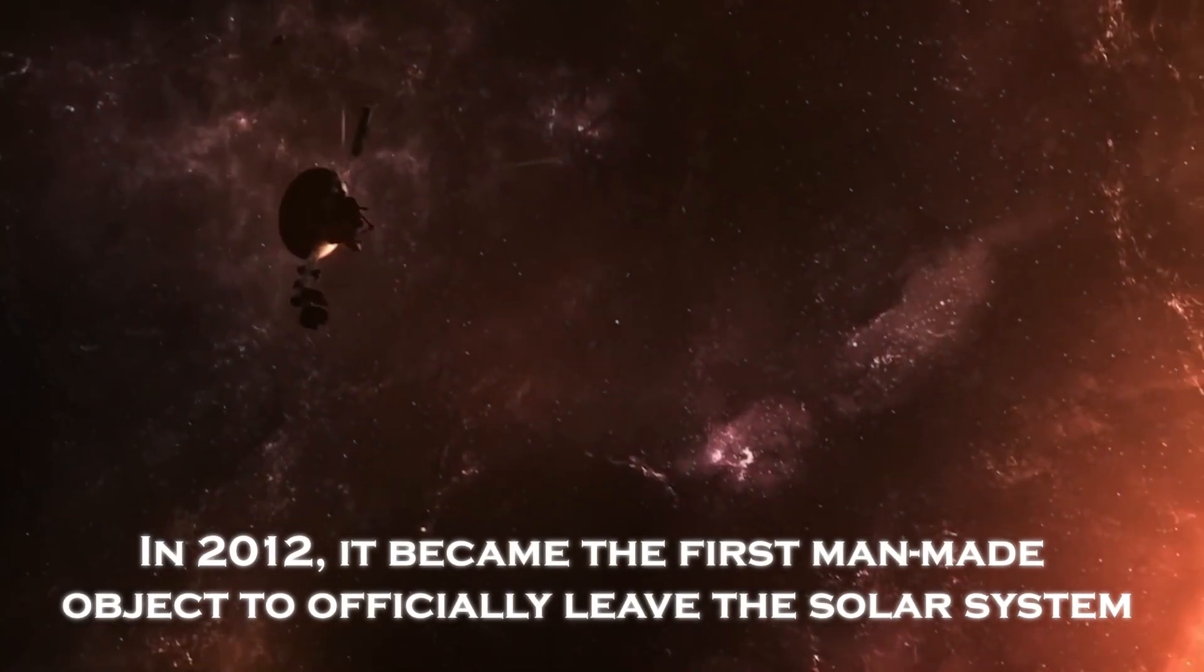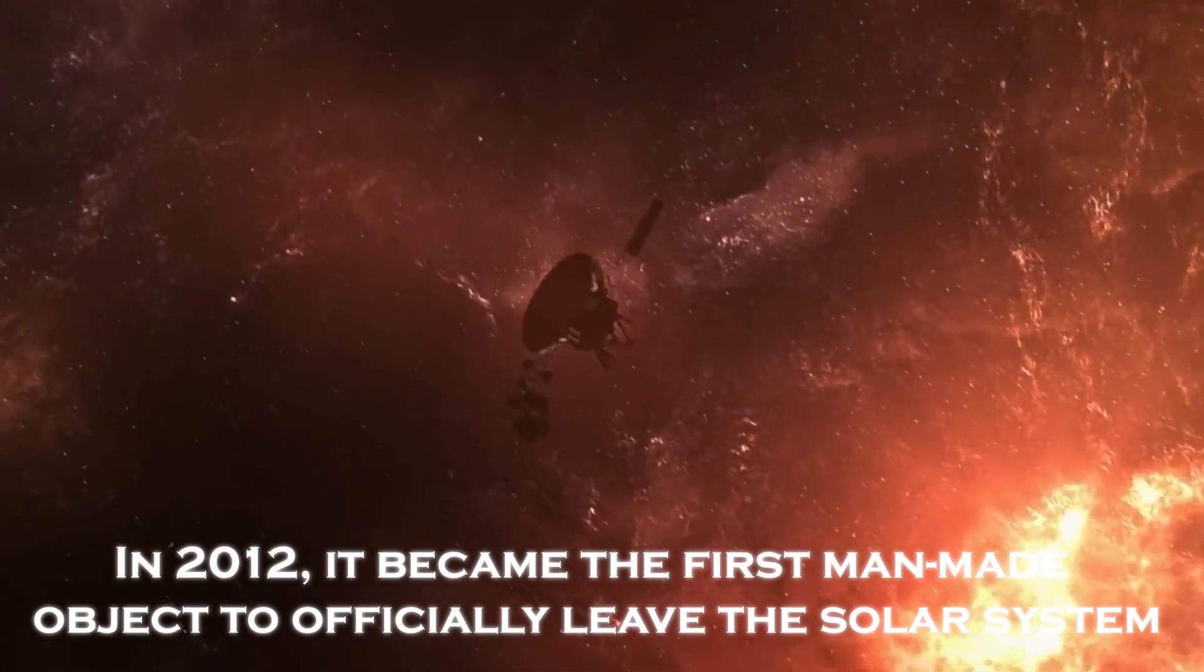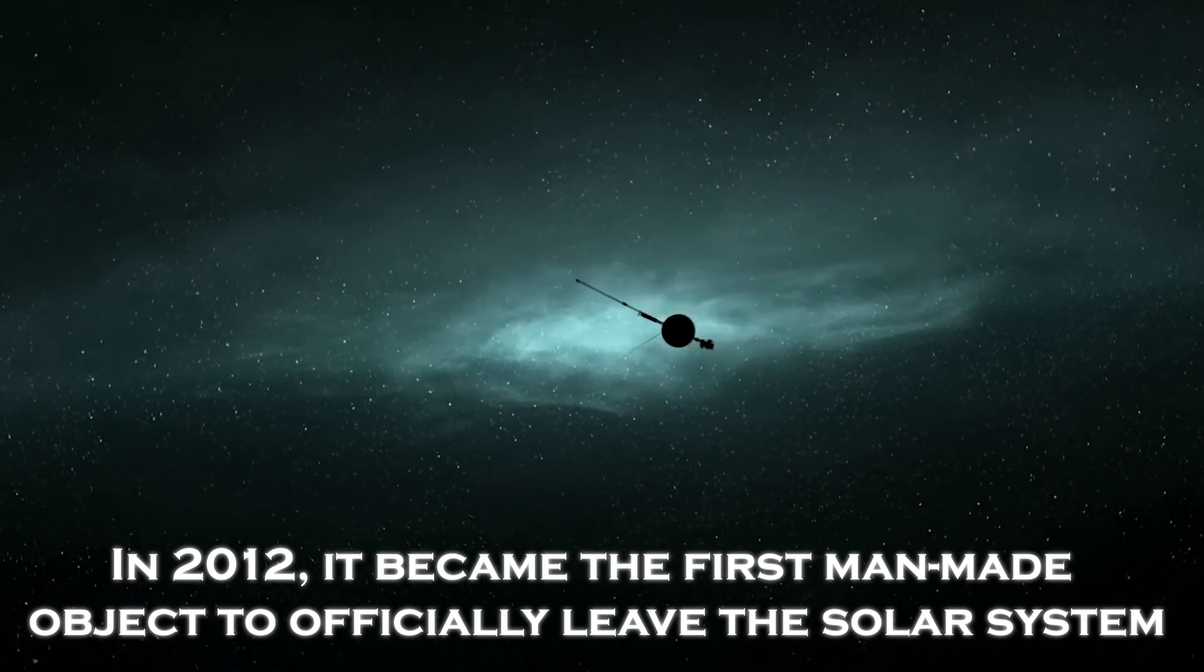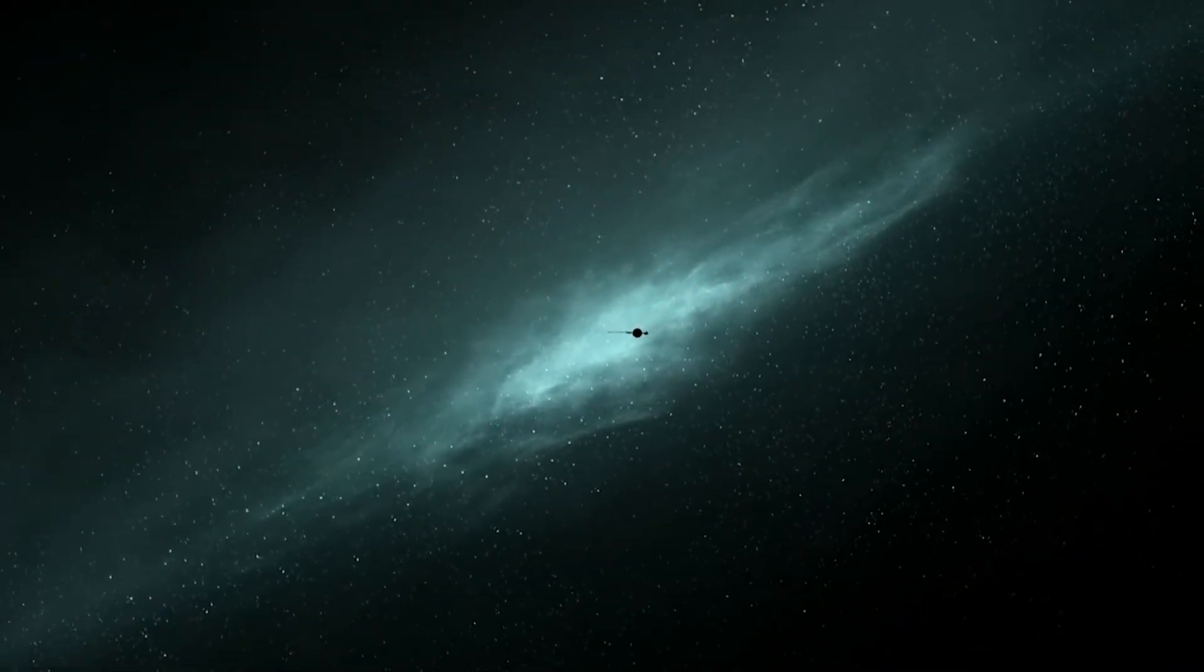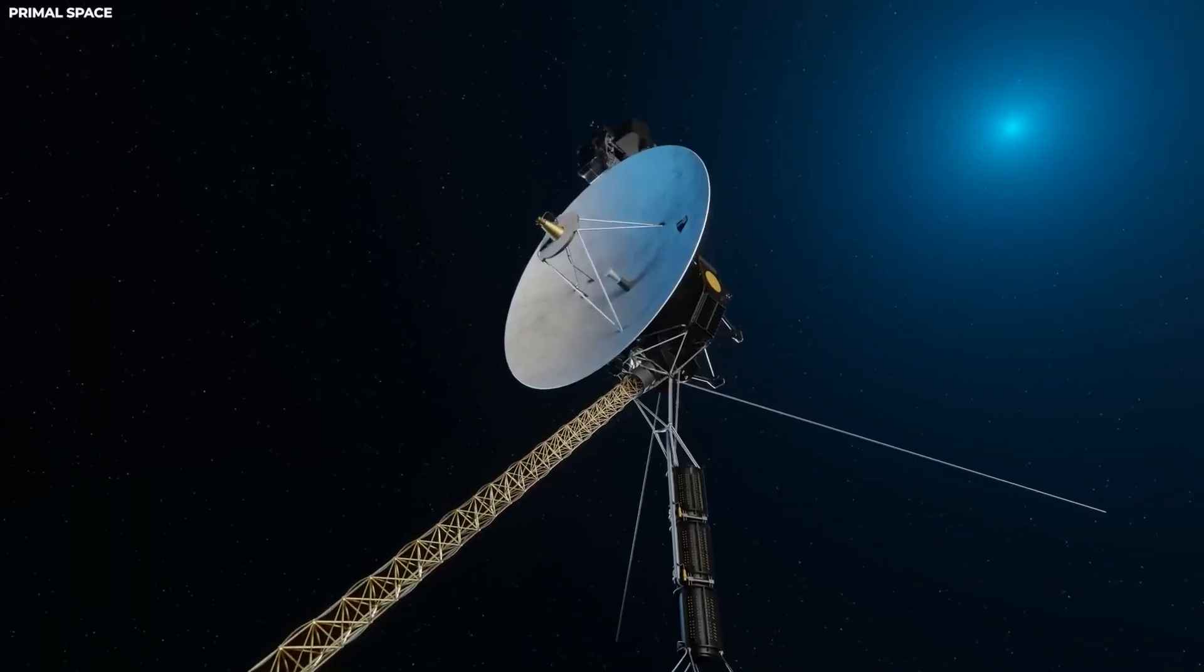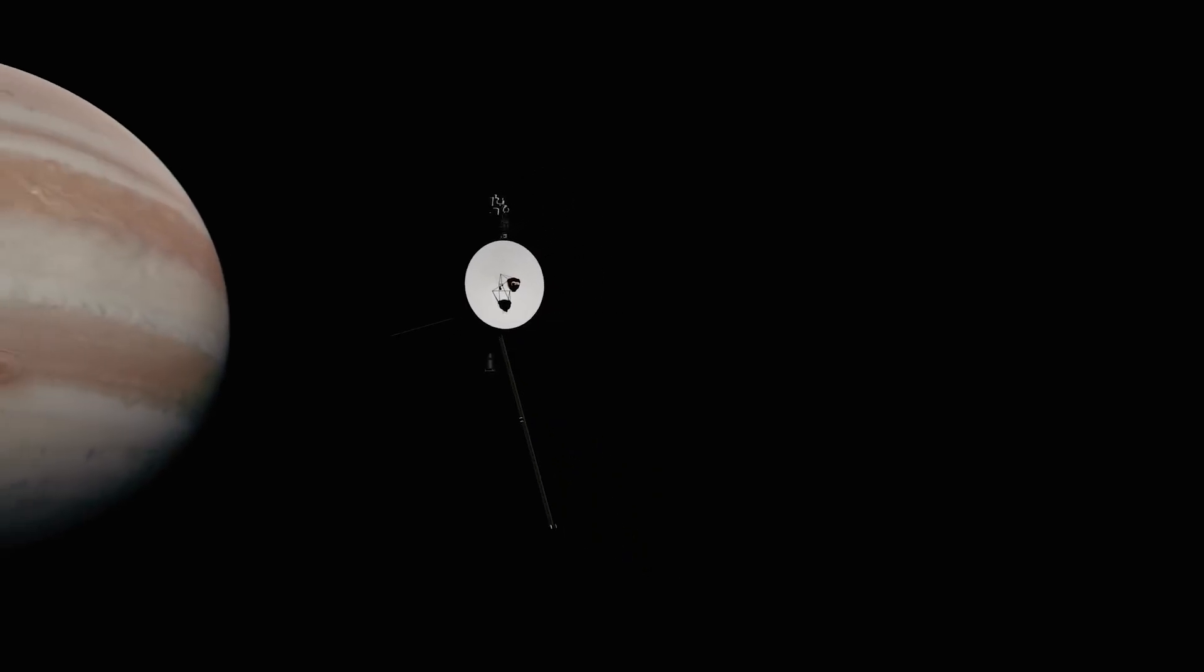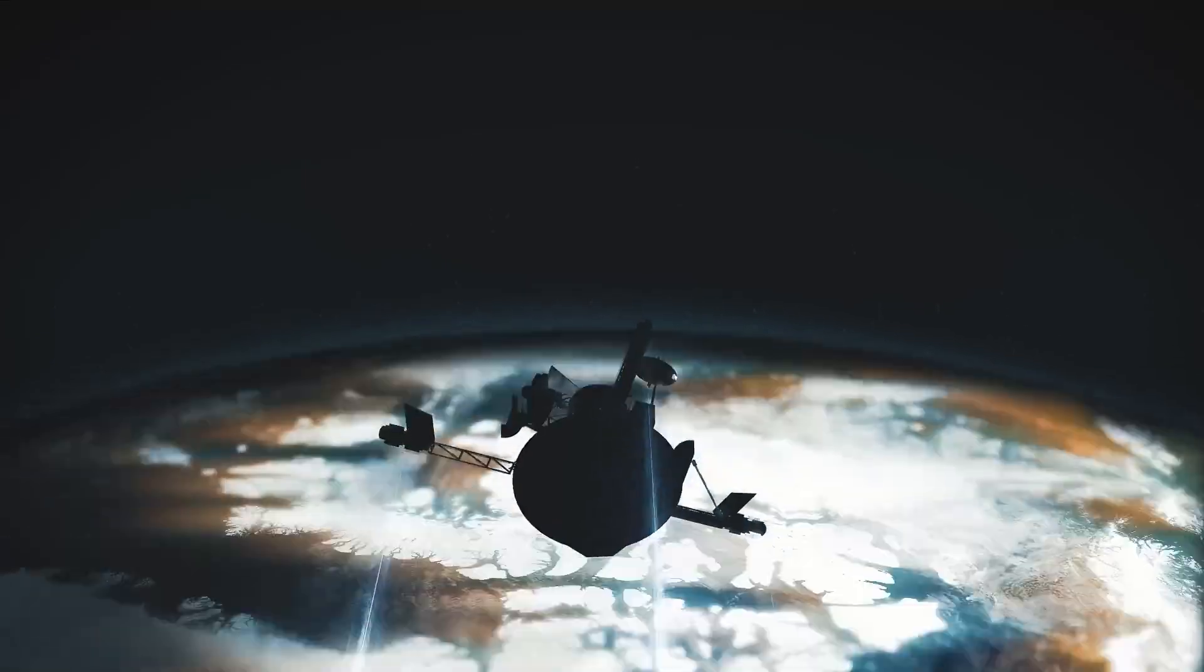In 2012, it became the first man-made object to officially leave the solar system, crossing the Heliopause and entering interstellar space. But now, more than 47 years after its launch, Voyager 1 has surprised us again.